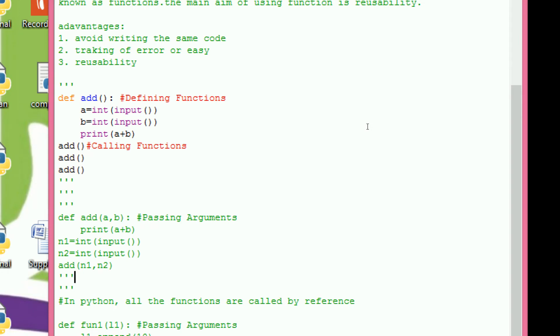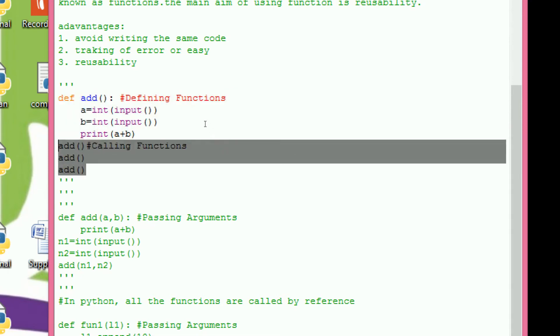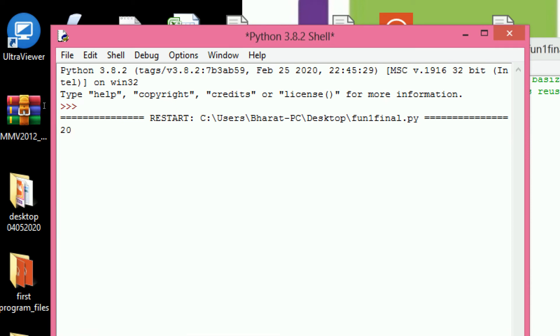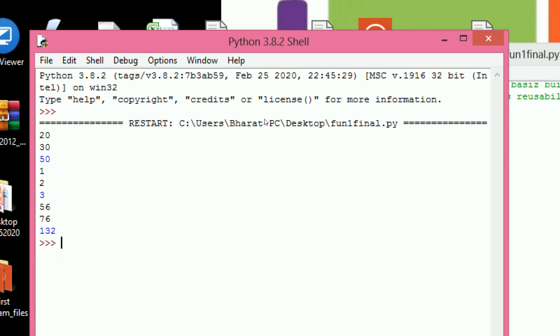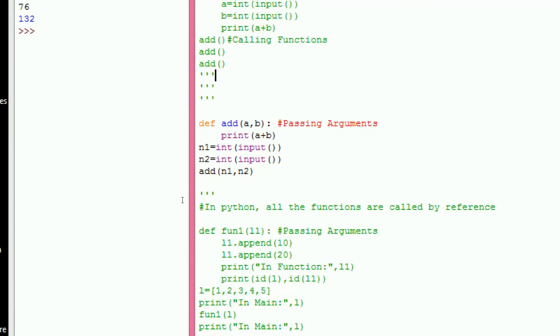Now we can see the execution of the program. So this is the function definition add. Three times I am calling this function add. 20, 30, it returns addition 56, 76, 132. Three times I call the function.